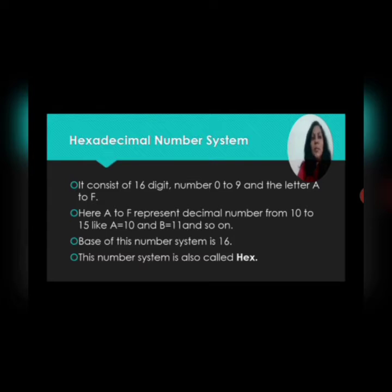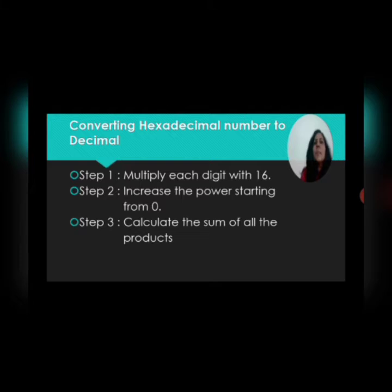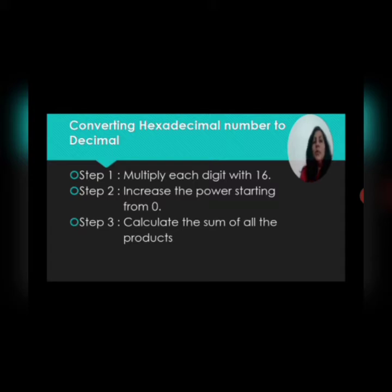This number system is also called hex. Now we are going to see how to convert a hexadecimal number into a decimal number. Step 1: multiply each digit by 16, starting from right to left. Step 2: increase the power starting from 0, writing 16 to the power 0, 16 to the power 1, 16 to the power 2, and so on. Finally, calculate the sum of all the products.